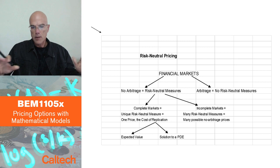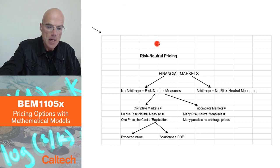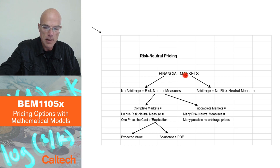Here is a preview, the general picture of what's going to happen. In terms of models of financial markets, you can think of models as those that have no arbitrage and models that have arbitrage.